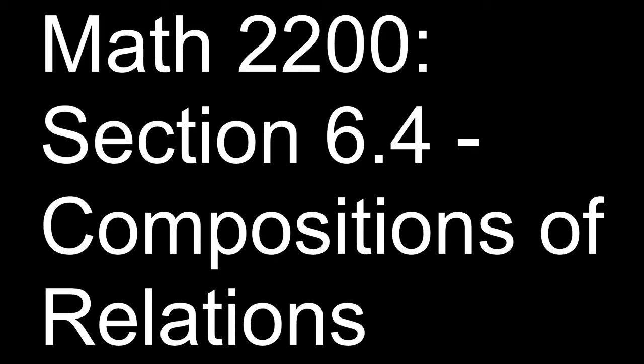You've already seen in an earlier chapter compositions of functions — this really is no different. You're going to have two mappings, two relations, and compose them, meaning you apply one relation and then take the output and apply the next relation to it. So you're going to have an element of one set mapped to an element of another set, and then map it to an element of another set through composition, just like with functions.